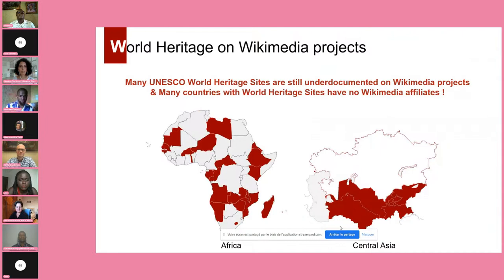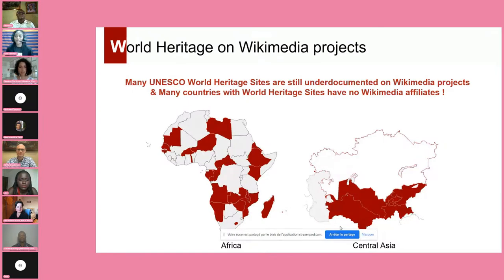Last year we discovered that many UNESCO World Heritage sites are still under-documented on Wikimedia projects — on Wikipedia, Wikimedia Commons, Wikidata, and others. Also, many countries with World Heritage sites have no Wikimedia affiliates, as seen in examples from Africa and Central Asia.